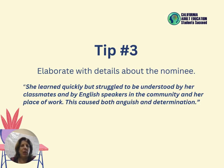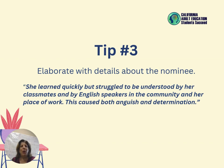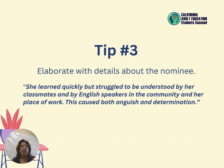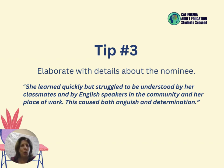Last but not least, tip three: elaborate with details about the nominee. Make sure you show the reader — those three scorers — enough information about your nominee. For example, where the person learned quickly but struggled to be understood by her classmates, by English speakers in the community, and at her place of work, causing both anguish and determination. That tells us so much about this person.